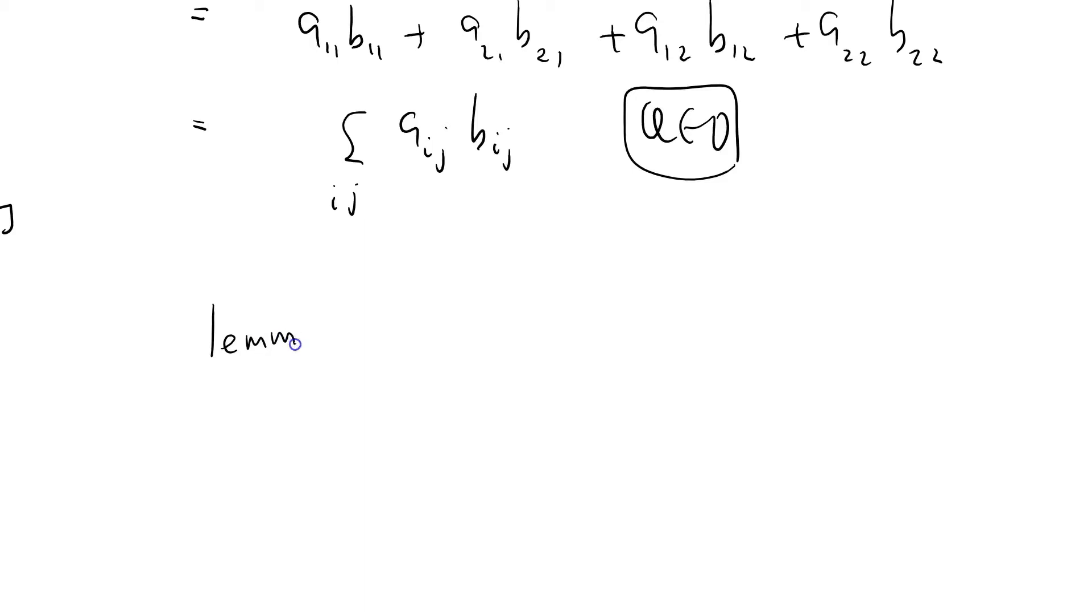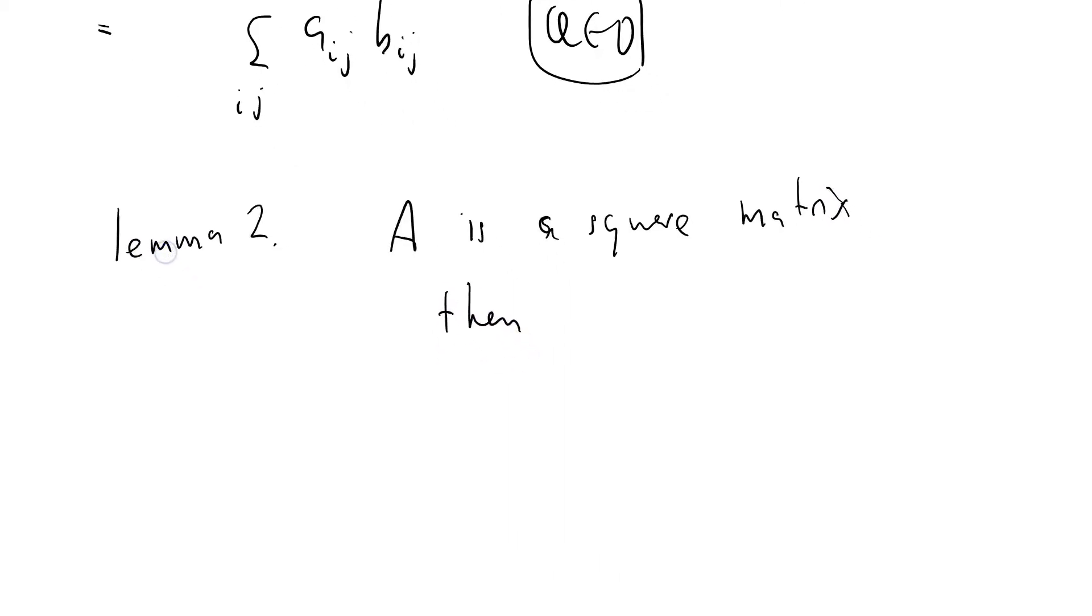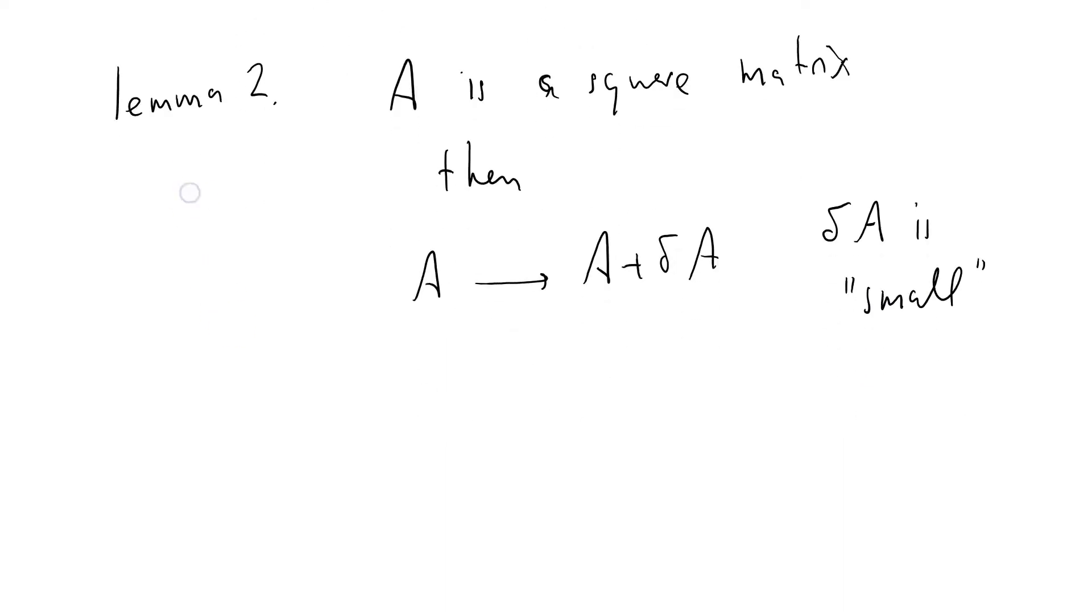Lemma 2. If A is a square matrix. Then, and we've got A going to A plus delta A, where delta A is small. And I'm going to put that in quotes. What I mean is small enough to neglect second order terms. A goes to A plus delta B. Then, Jacobi's formula...